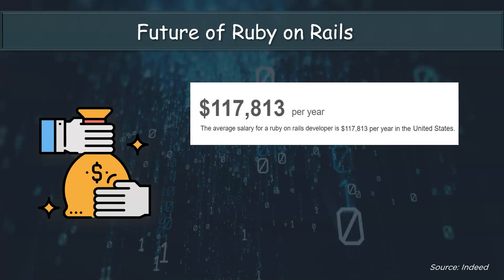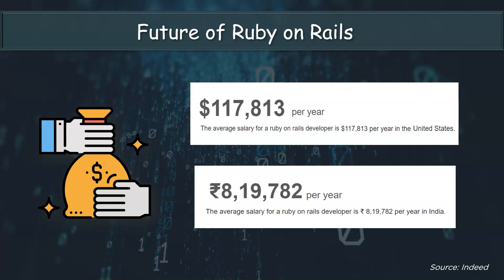Talking about salary, according to Indeed, the average salary of a Ruby on Rails developer in the United States is around $117,000 US dollars per annum, while the average salary in India is about 8,19,000 Indian rupees per annum. This shows that developers are in demand and now is the right time to invest to make your career as an ROR developer.